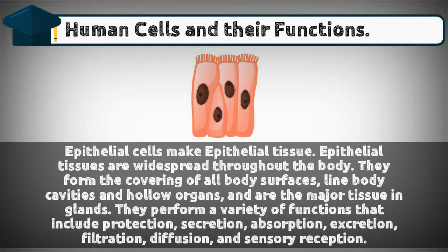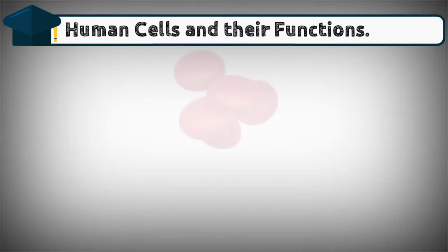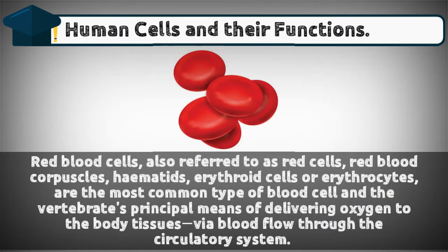Epithelial cells make up epithelial tissue, which is widespread throughout the body. They form the covering of all body surfaces, line body cavities and hollow organs, and are the major tissue in glands. They perform a variety of functions including protection, secretion, absorption, excretion, filtration, diffusion, and sensory reception.